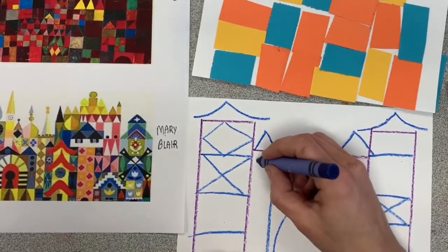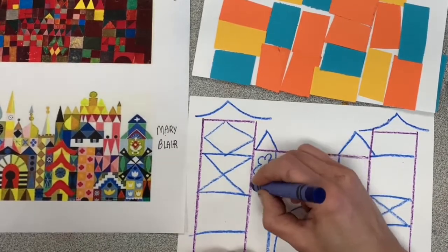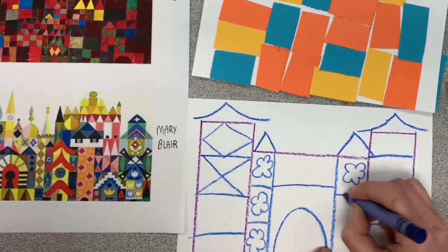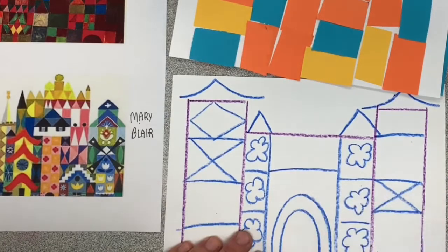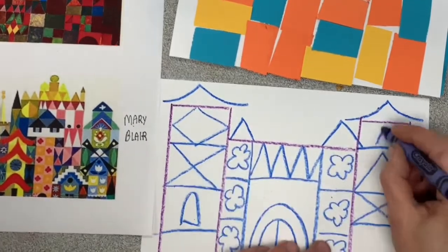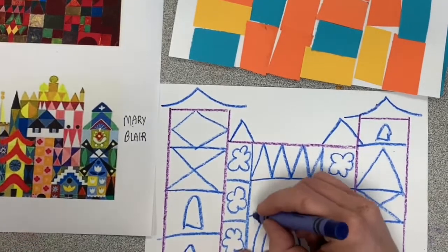She also has a lot of just organic shapes. Shapes with no names, really, like flowery shapes and cloverish shapes. So I'm repeating them over and over again and filling up my castle with interesting designs.